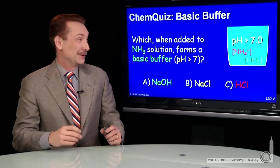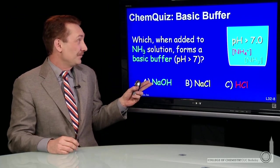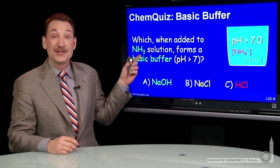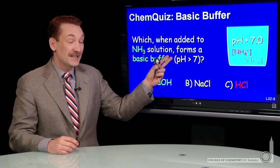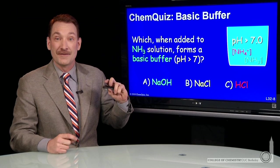Let's look at making a buffer solution. Which of the following, when added to NH3, ammonia, the weak base, forms a basic buffer at pH greater than 7?